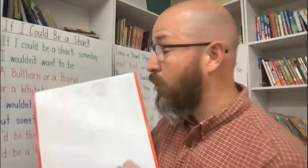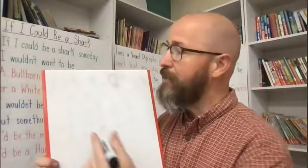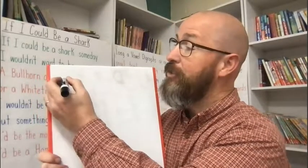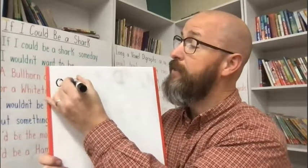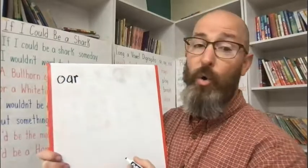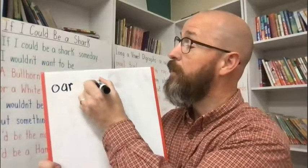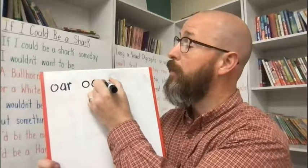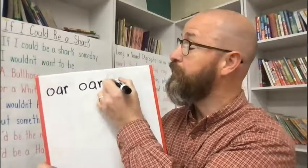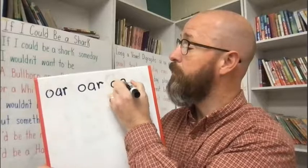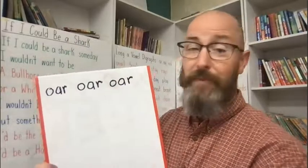Get out your pencil and paper, or your whiteboard and marker, whatever you're using today, and let's practice writing them. We're going to write them three times each, and every time we write it I want you to say the sound it makes. Let's start with O-A-R. Write it and say 'or' — or, or, or.